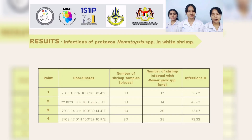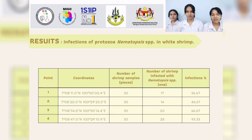The results show that spot 4 has the highest infection at 93.33% and spot 2 has the lowest infection at 48%.